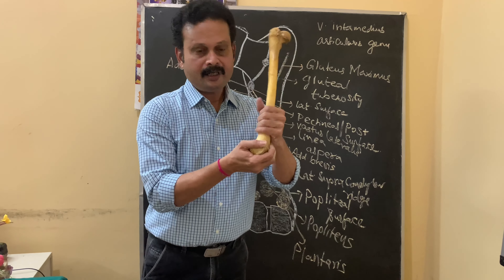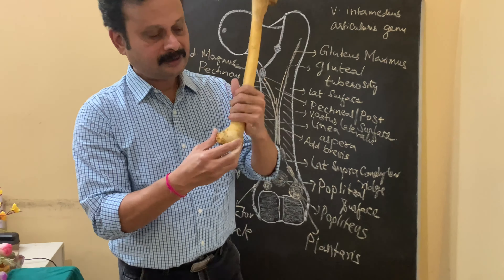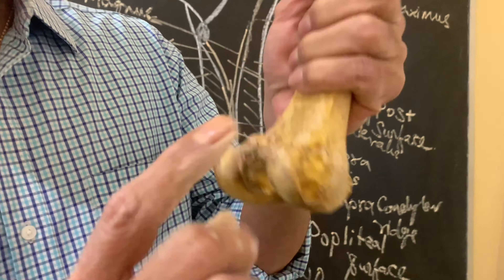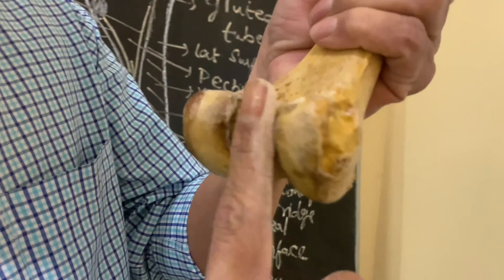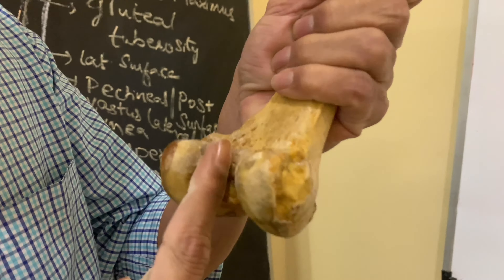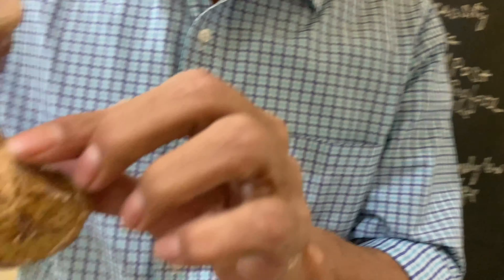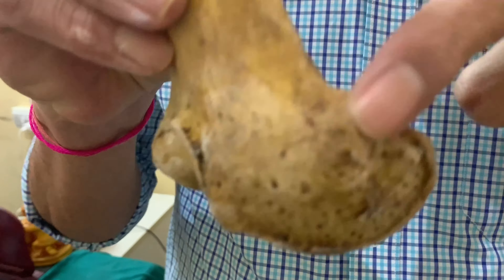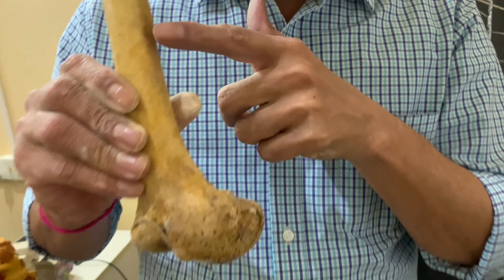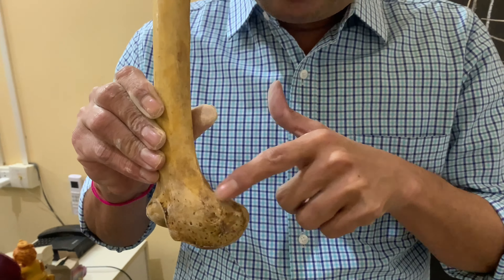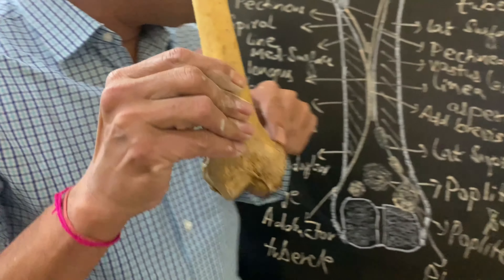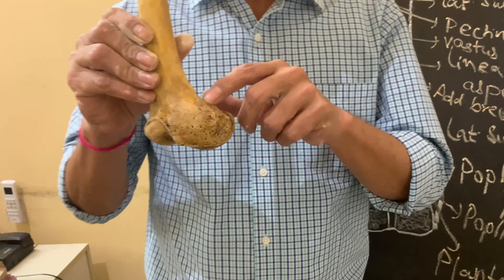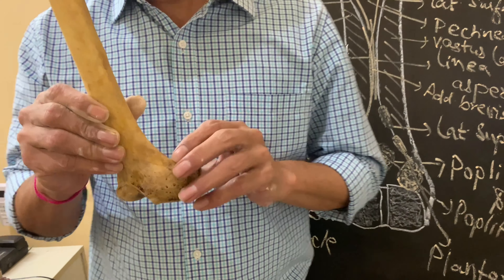Now coming to the lower end. The lower end consists of two condyles: medial condyle and lateral condyle, and the intercondylar area. An important point to stress is the adductor tubercle, which is in line with the lower part of the medial supra-condylar ridge. This adductor tubercle has some importance.